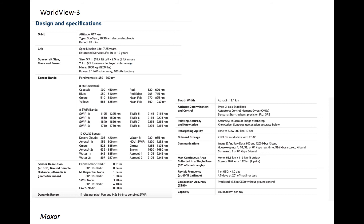The maximum allowable resolution of a private US satellite is 25 by 25 centimeters. Classified government satellites are known to use large mirrors, comparable to those used on space telescopes, that permit even higher resolution. The satellite from which a certain US government civilian leaked imagery on Twitter is thought to have a spatial resolution of approximately 10 by 10 centimeters.